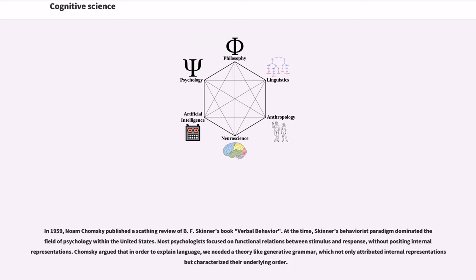In 1959, Noam Chomsky published a scathing review of B. F. Skinner's book Verbal Behavior. At the time, Skinner's behaviorist paradigm dominated the field of psychology within the United States. Most psychologists focused on functional relations between stimulus and response, without positing internal representations. Chomsky argued that in order to explain language, we needed a theory like generative grammar, which not only attributed internal representations but characterized their underlying order.